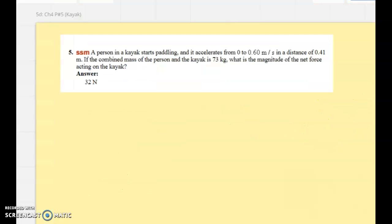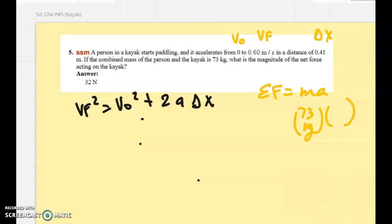On number 5, we have a person in a kayak paddling. They give you information about an initial velocity, a final velocity, and a displacement. And they want to know what the magnitude of the net force is on this. The last step is certainly going to be the net force is the mass times the acceleration. If I just take that 73 kilograms and multiply it by whatever the acceleration is, then I should be in good shape. What is the acceleration? Well, kinematics-wise, the acceleration could be found with final velocity squared equals initial velocity squared plus 2 times acceleration times displacement. So you'll be able to do some substitution there, find what that acceleration is, plug it in right there. And I don't think you'll have trouble getting 32 newtons as that net force.